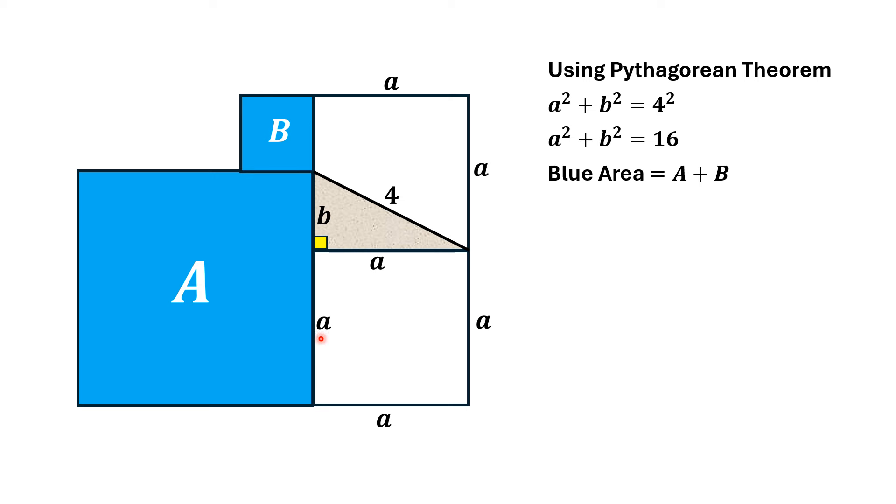We know that this length is A and this length is B. It means the side length of this square, the blue shaded larger square, is A plus B. And it means all the sides of this square have length A plus B.